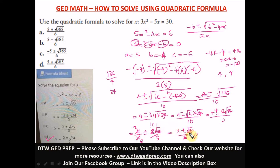That's our final answer and the right option is option D. You can see how to solve this and how to break down an irrational number under the square root. If you have more questions you can reach me on the Facebook group or drop a comment and I'll respond. Thank you so much from DTWG The Prep — you are destined to win. See you in our next video.